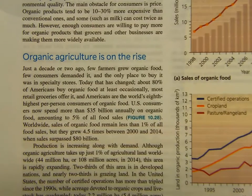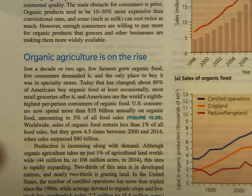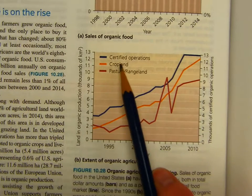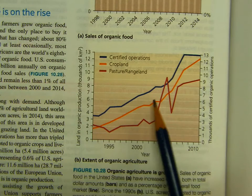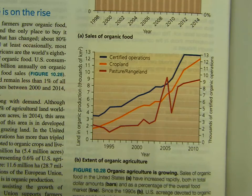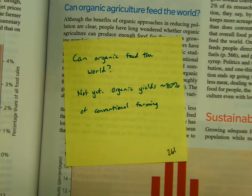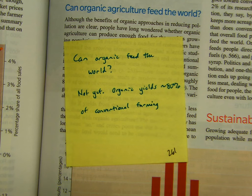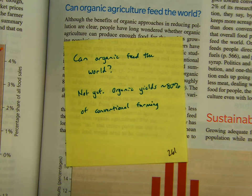Organic agriculture is on the rise. Charts show certified operations and cropland/pasture acreage increasing. But the big question on page 261 is: can organic agriculture feed the world? Not yet — we're getting there but not yet. Organic farming yields about 80% of what conventional farming produces. Because of GM modifications, conventional crops have been made to grow faster, allowing two harvests instead of just one.